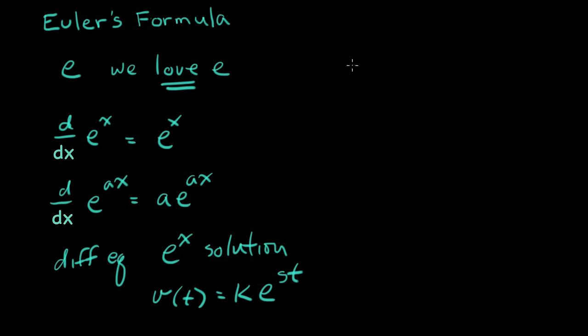So there's something else we love too. And that is sinusoids, or sines and cosines. Okay, we love these. And that gets two lines. Now, why do we love these? It's because they happen in nature.